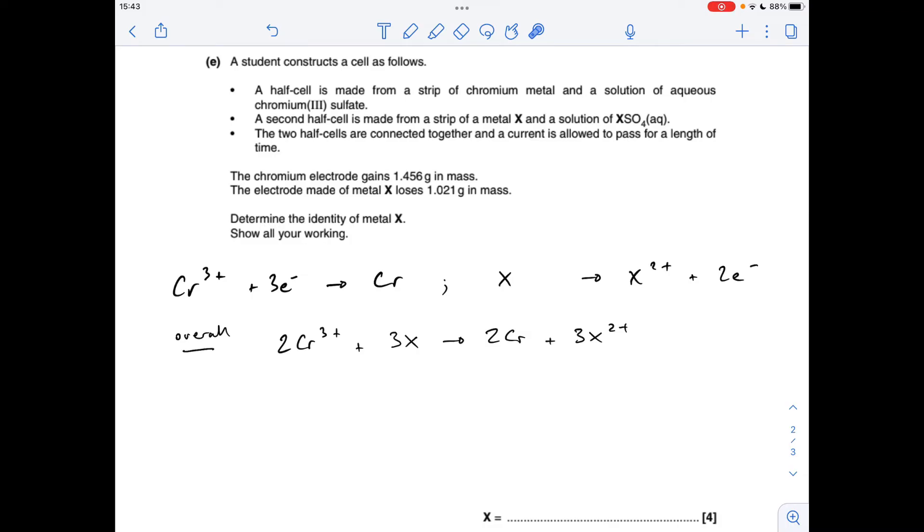So from that, we can write the overall equation for the reaction. And all I've done is multiplied the chromium one by two and the X one by three to get the electrons to cancel.